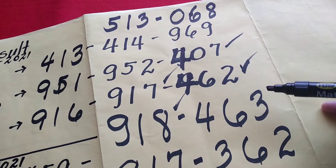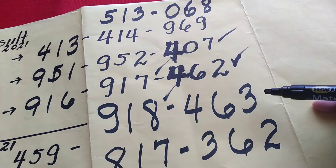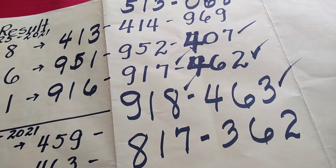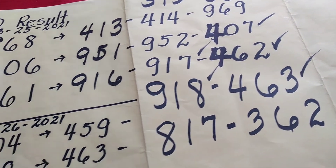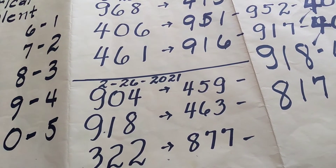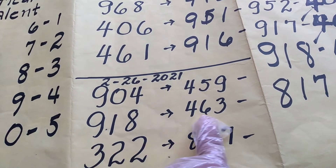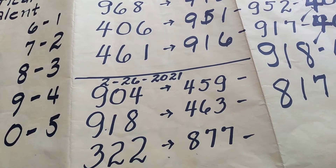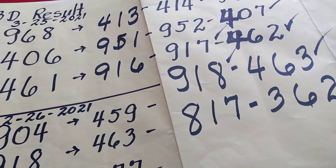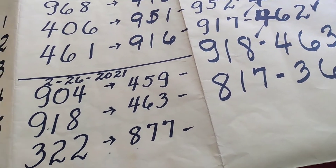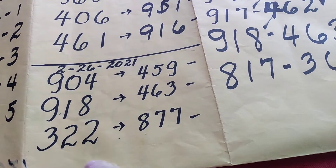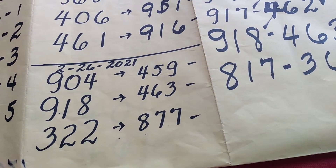So pwede rin maging ito: 4, 6, 3. Kasi kung ibabatay natin sa previous, meron. Tapos yung meron 3, 2, 2 at 8, 7, 7.